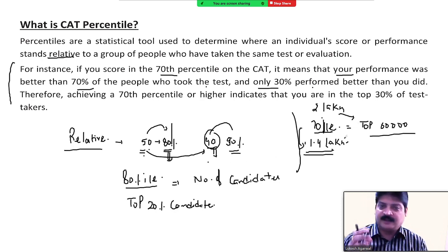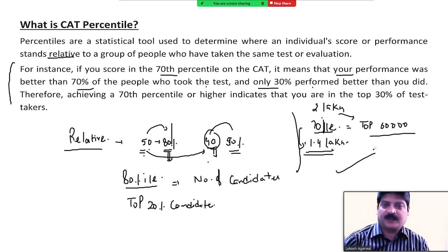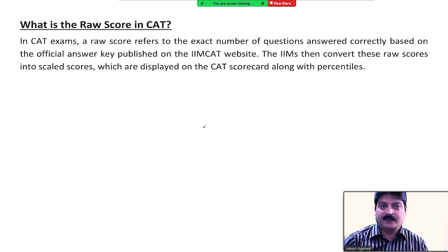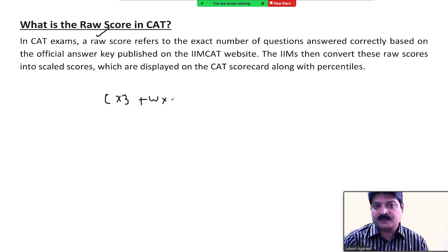Marks to percentile mapping is not fixed every year — it will depend on the difficulty level of the paper. Now, what is raw score? Raw score is basically the score you get after multiplying the correct number by 3 and deducting wrong marks by minus 1.